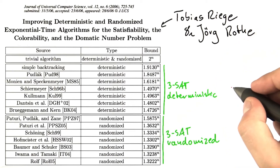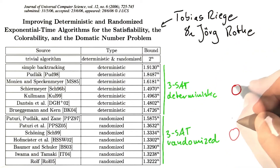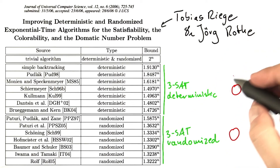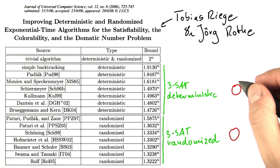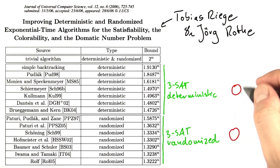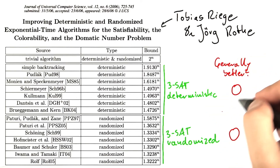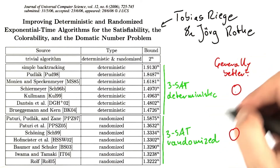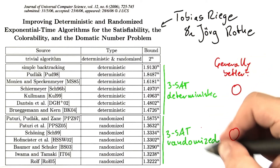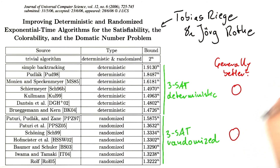Now this is of course going to be a rather easy question, but which of these two algorithm categories generally seems to be better? Is it the deterministic algorithms up here, or the randomized algorithms down here?